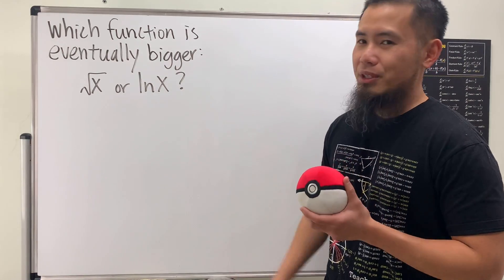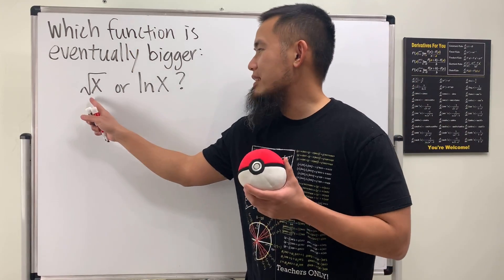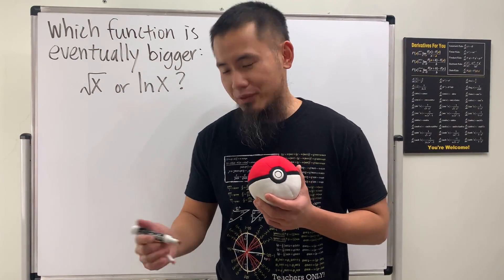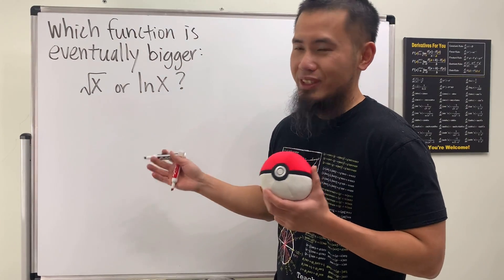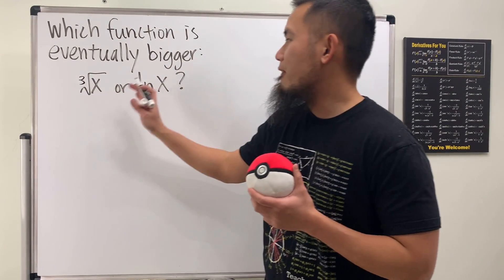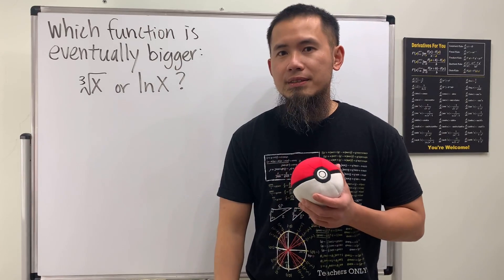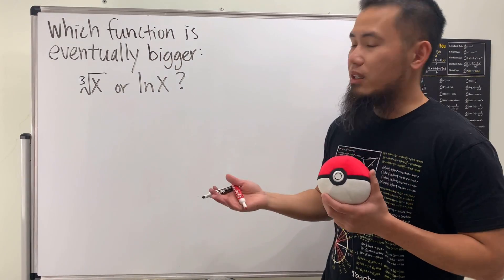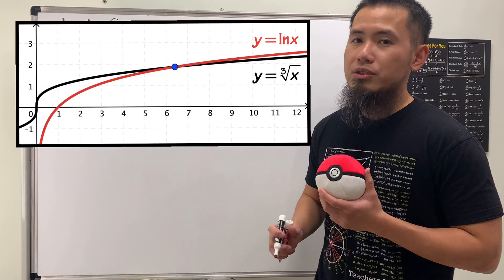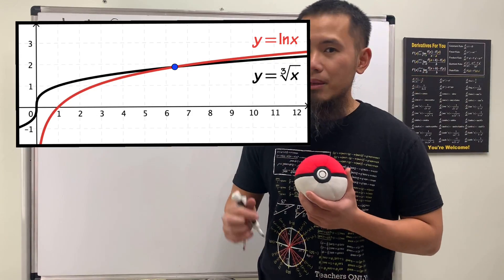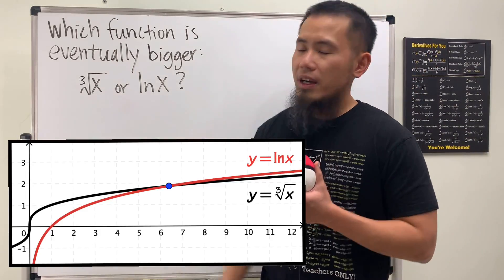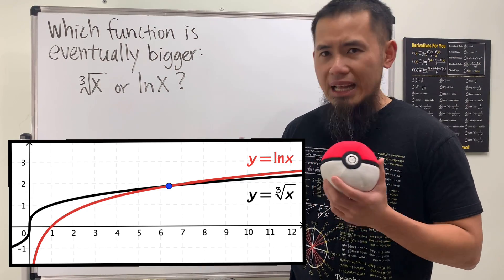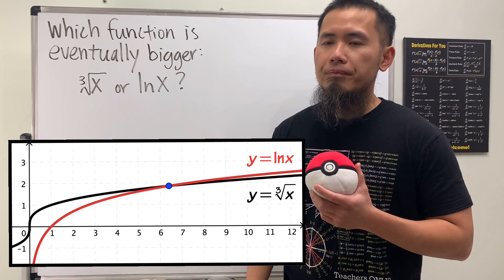This is like saying a little kid is trying to fight a big guy. But don't worry, I'm going to fix this and make it much more interesting. How about we compare the cube root of x versus the natural log of x? If you look at the picture, this is more interesting, because at first the cube root of x is above, but around x = 6-point-something, the natural log of x actually takes over.